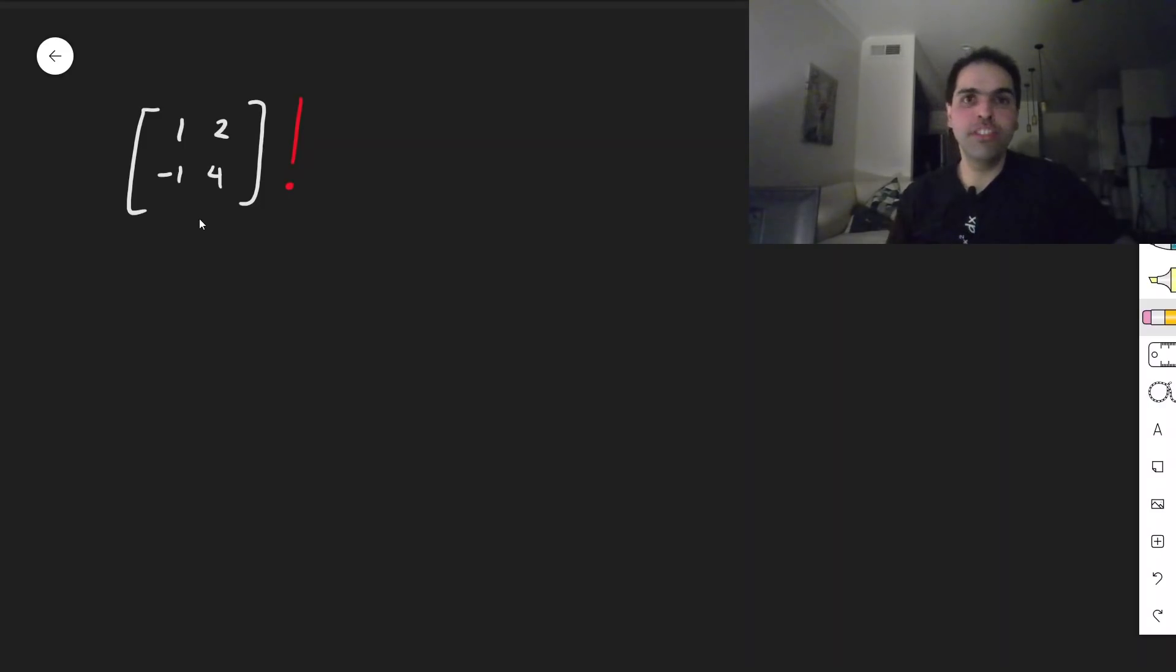Alright, so in particular, let's calculate the factorial of [1 2; -1 4]. And before doing that, let's think what properties would we like this factorial to satisfy? First of all, we need the analog of 0 factorial equals 1, which in the matrix world just becomes the factorial of the 0 matrix should be the identity matrix. On the other hand, we would like the factorial of A, whatever this is, to be the same as A times the factorial of A minus 1, which here becomes A minus the identity. So keep this in mind when we'll do our derivation.